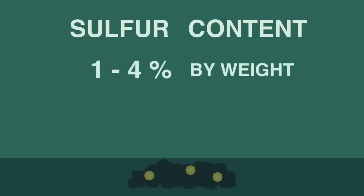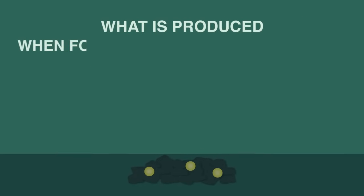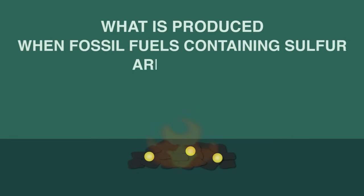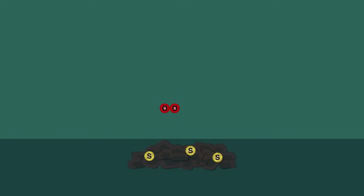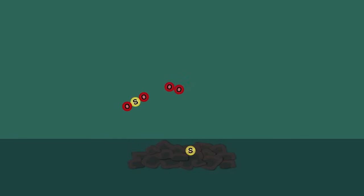The sulfur content of coal and oil is usually between one and four percent by weight. What do you think is produced when fossil fuels containing sulfur are burnt? Pause the video whilst you think. When the coal is burnt, the sulfur and the carbon atoms join with oxygen from the air and are released into the atmosphere as carbon dioxide and sulfur dioxide.